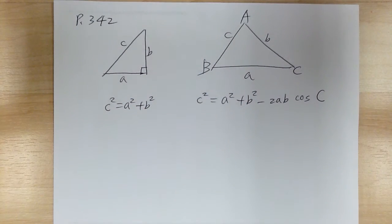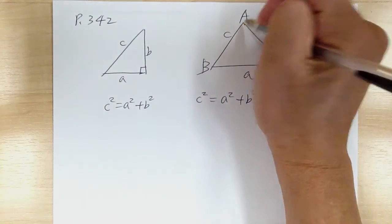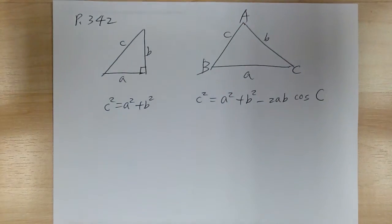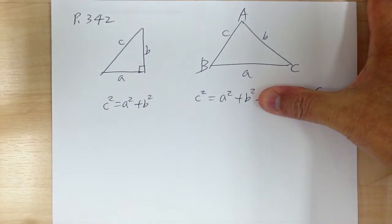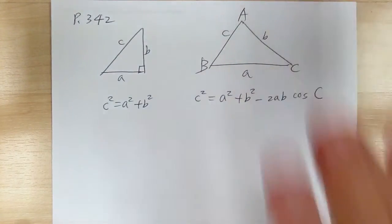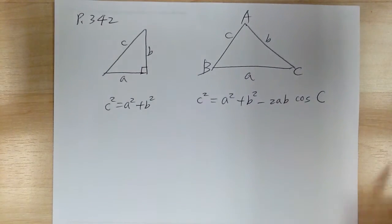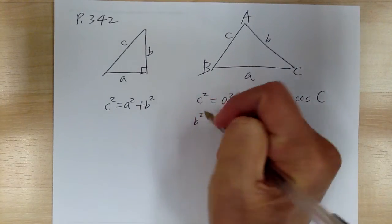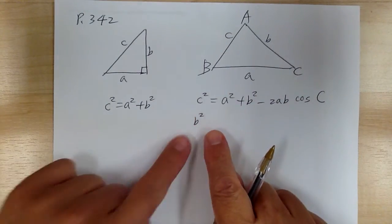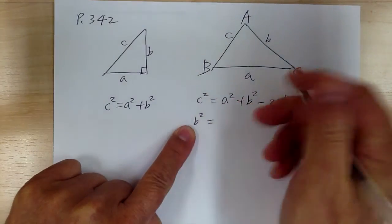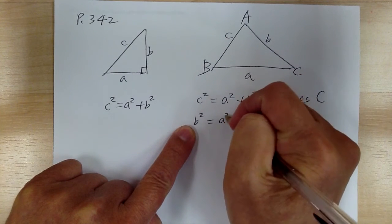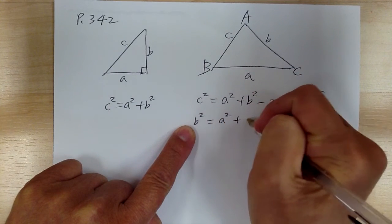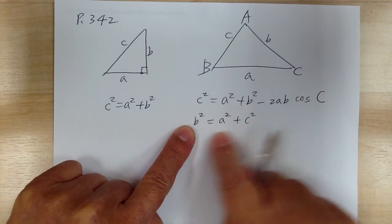When you try to memorize a formula, try to base it on the pattern. You're familiar with the Pythagorean theorem. So whatever side you're looking for, let's say if you're looking for B, you need to start with B squared, and then you use the other two letters. So B is already there, so the other two letters would be A squared and C squared. Again, you have to get all three letters.